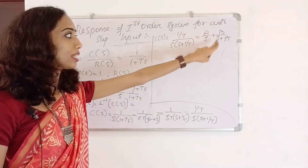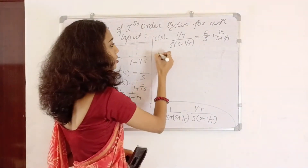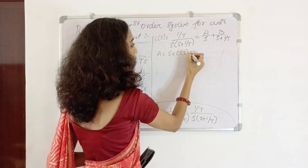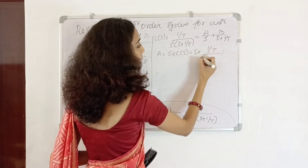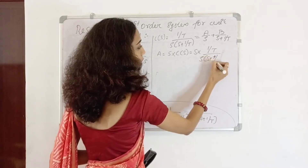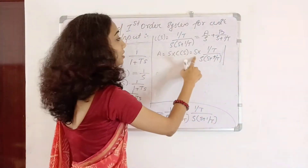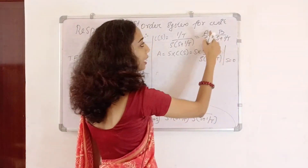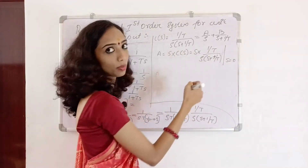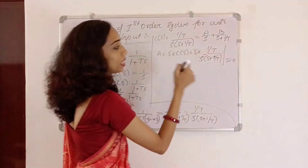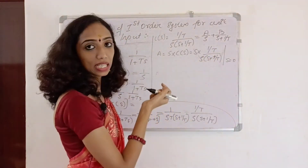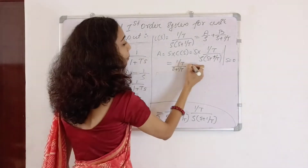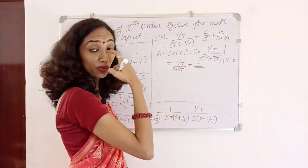Partial fraction is like A by S plus B by (S plus 1 by T). To get A, cross-multiply: S into C of S equals S into (1 by T) divided by S into (S plus 1 by T). As S tends to 0, we get A equals 1 by T divided by 1 by T, so A equals 1.